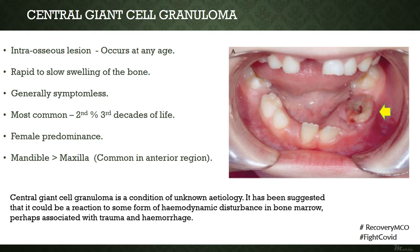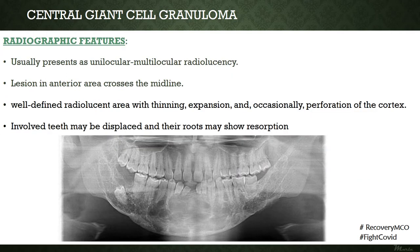The pathogenesis of central giant cell granuloma is relatively unknown; however, it has been suggested that it could be a reaction to some form of hemodynamic disturbance in the bone marrow, possibly related to trauma or hemorrhage. Radiographic features include a unilocular or multilocular radiolucency. Most lesions cross the midline in the anterior region. The lesion presents as a well-defined radiolucent area with thinning and expansion of the cortex, sometimes leading to perforation.